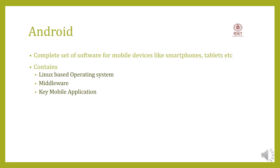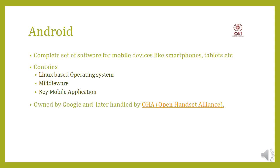Middleware means it is a set of libraries which helps the applications in your devices to interact with the operating system kernel, and it can enhance the working of your applications. Next is key mobile applications — these are built-in applications that you get when you load Android on your phone, such as the phone dialer, SMS, Gmail, calculator, camera, etc.